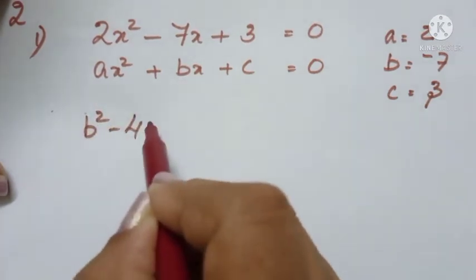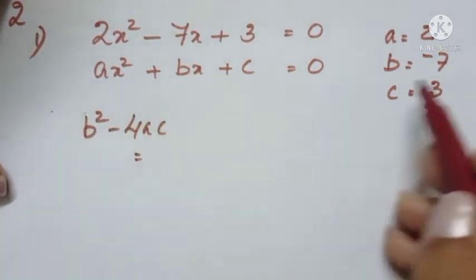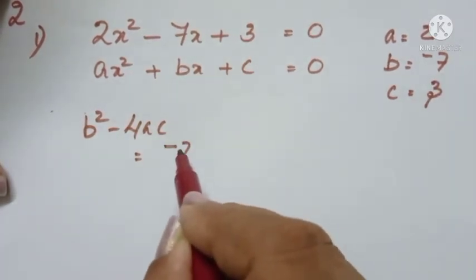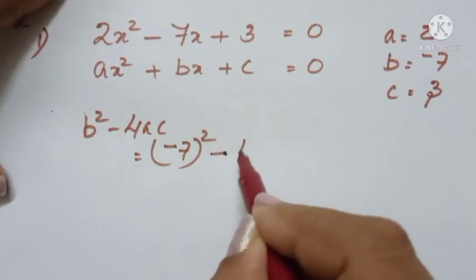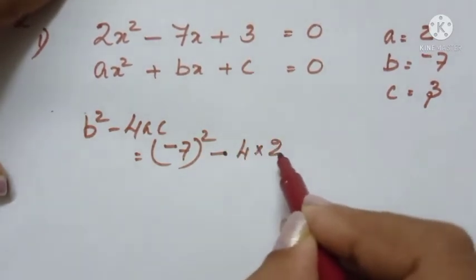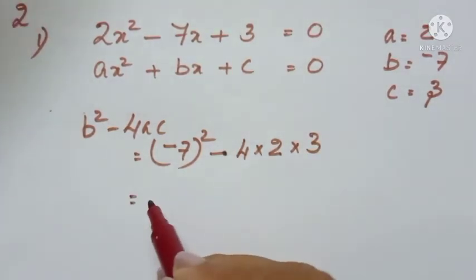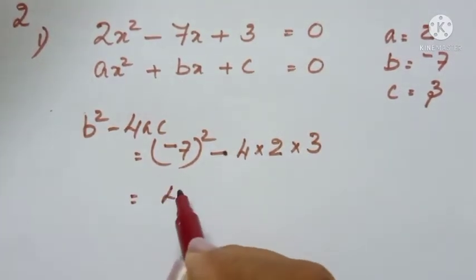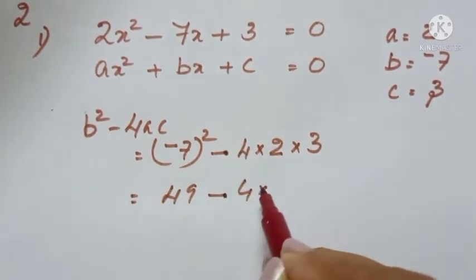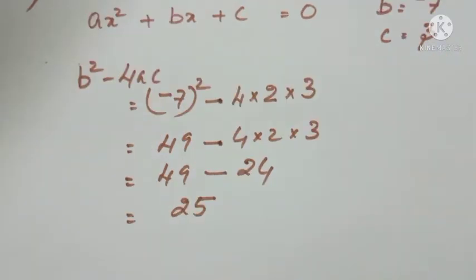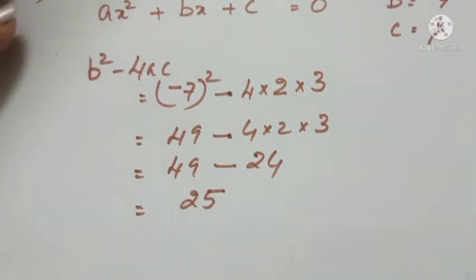Now we compute b² - 4ac. b is -7, so b² equals (-7)² minus 4 times 2 times 3. That gives 49 minus 24, so b² - 4ac equals 25.